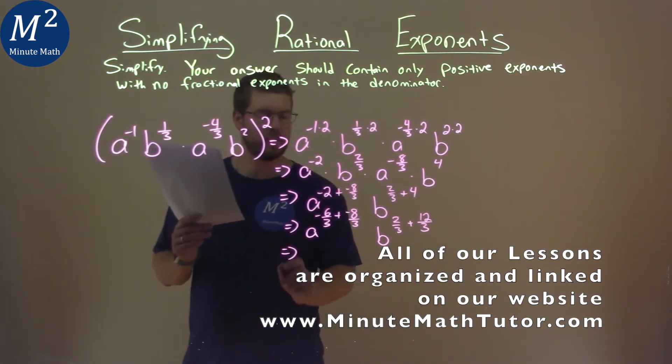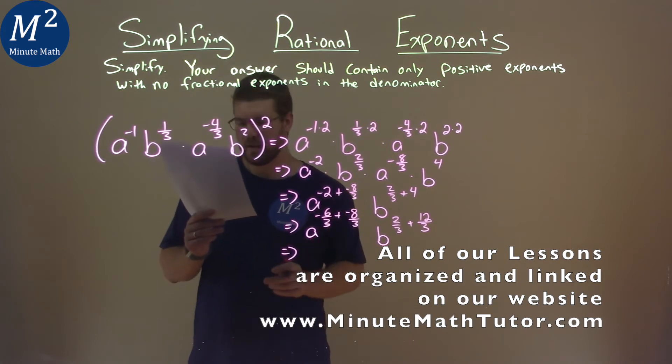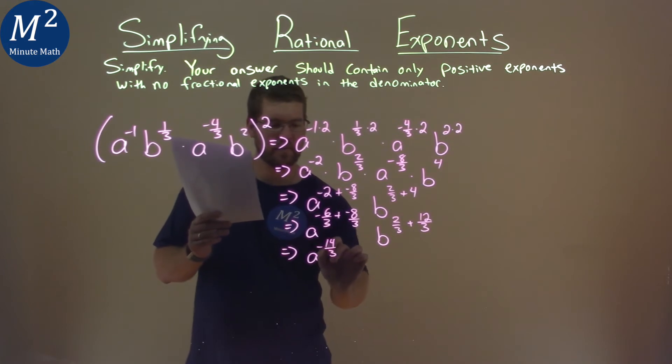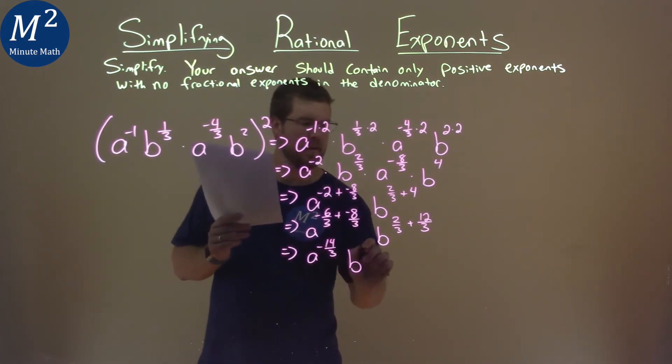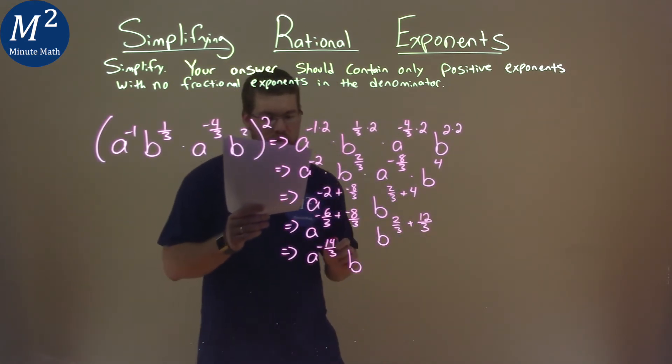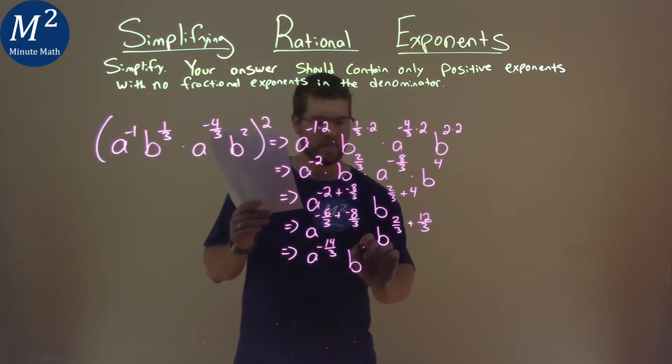Now, from there, let's keep on simplifying. Negative 6/3 plus a negative 8/3 is a to negative 14/3. And b here as well, 2/3 plus 12/3 is a positive 14/3.